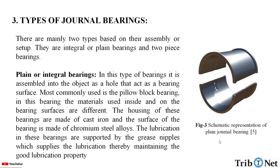What are the types of journal bearings? There are mainly two types based on their assembly or setup: integral or plain bearings, and two-piece bearings. In the plain or integral type, the bearing is assembled into the object as a whole that acts as a bearing surface. The most commonly used is the pillow block bearing. In this bearing, the materials used inside and on the bearing surfaces are different.